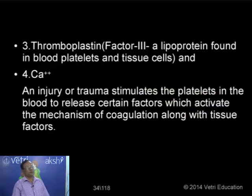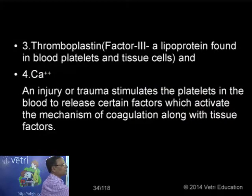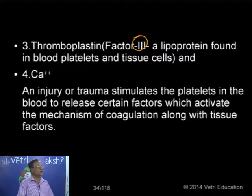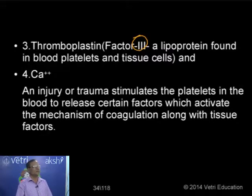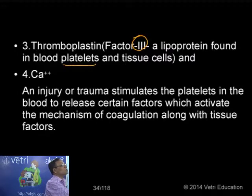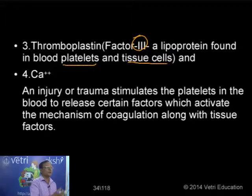Factor number 3 is thromboplastin, a kind of lipoprotein. It is not synthesized in the liver but is formed in the tissues as well as in the platelets. The lipoprotein is abundant in platelets and tissue cells. The last most important factor is calcium ions. In the absence of calcium ions, there is no process of clotting.